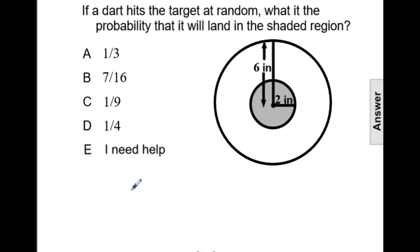In order to find this probability, we need to find the area of the shaded region and put it over the area of the total region.